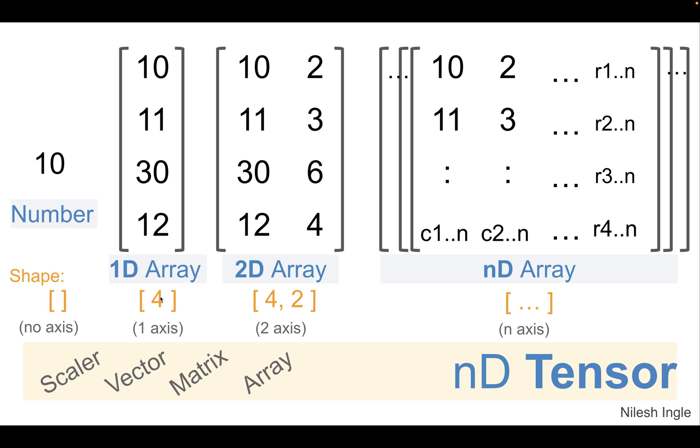Now, you will argue that this can also be represented as a four by one matrix. But in TensorFlow docs, if you refer to them, this is a one dimensional array. So it has axis one, and so as a rank one. Similarly, there could be n dimensions. And so in general, a tensor is representing n dimensional matrix.